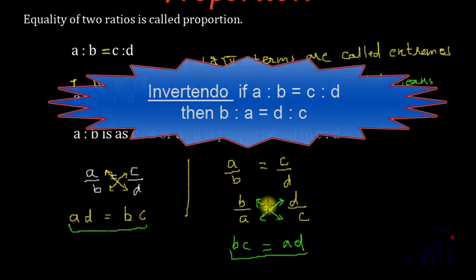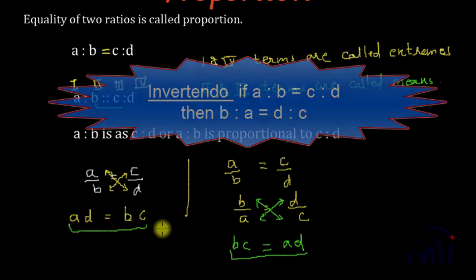This is called invertendo. So if A, B, C, D are in proportion — that means A is to B is equal to C is to D — then B is to A and D is to C will also be in proportion. This can be proved because in both cases, when we cross multiply, we get AD is equal to BC.